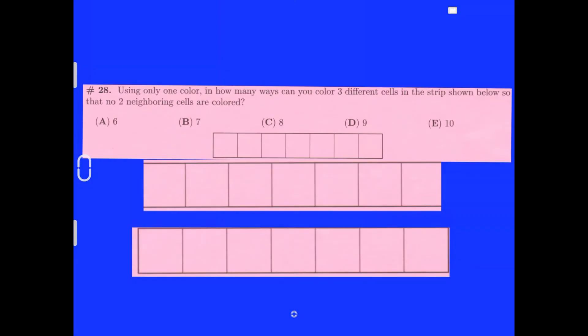Using only one color, in how many ways can you color 3 different cells in the strip shown below so that no 2 neighboring cells are colored? If we look at the first one, we can have 1 right here, 2 right here, and 3 right here. Then we can have 1 right here, 2 right here, 3 right here. Finally, we can have 1, 2, and 3. Those are options if you can put them all like that, but that would just be 3. If we look at the second part, if we have 1, 2, and 3, this 3 can move in these 3 spots whenever it wants. This 2 can move in these 2 spots, and this 1 can move in these 2 spots. It would be plus 2, plus 2, plus 3, and that gets you 10. Our answer is E, 10.